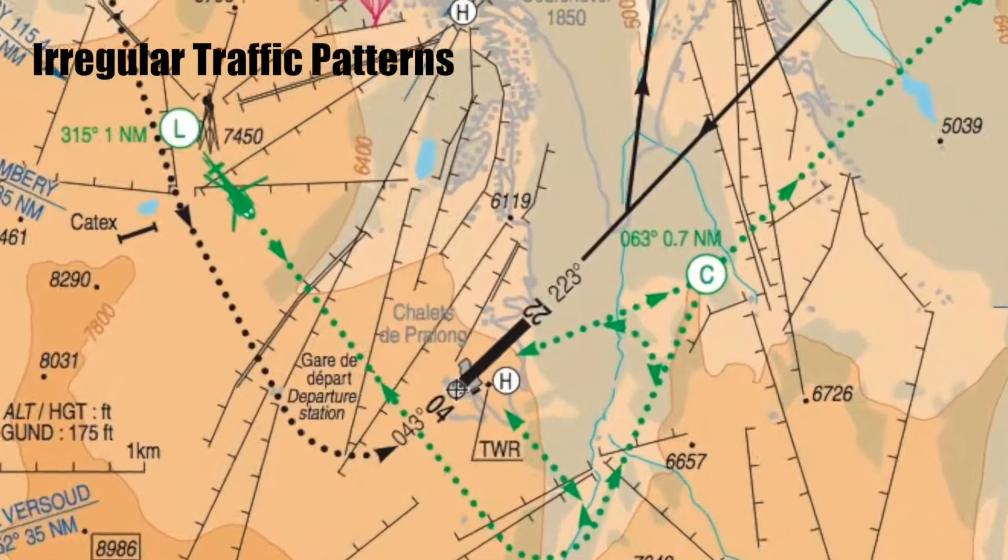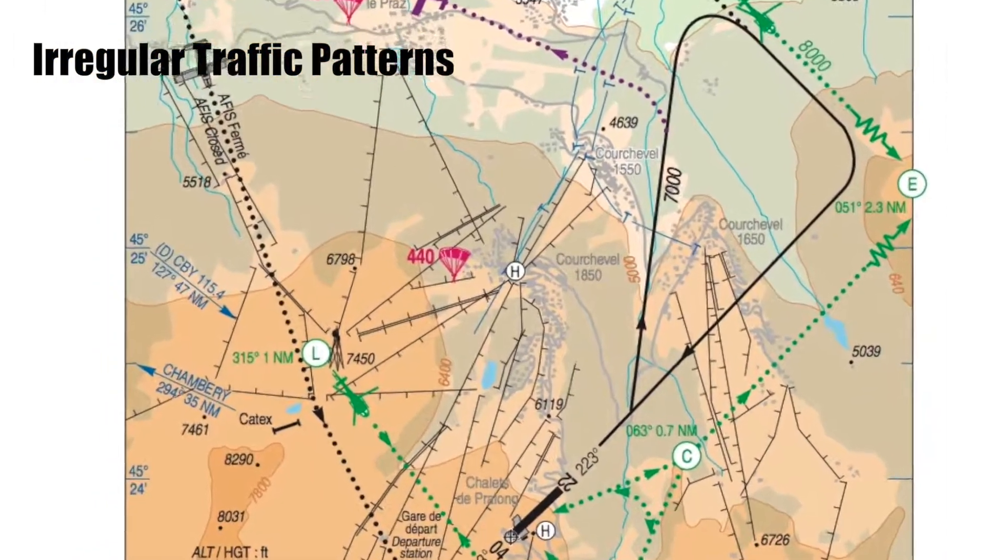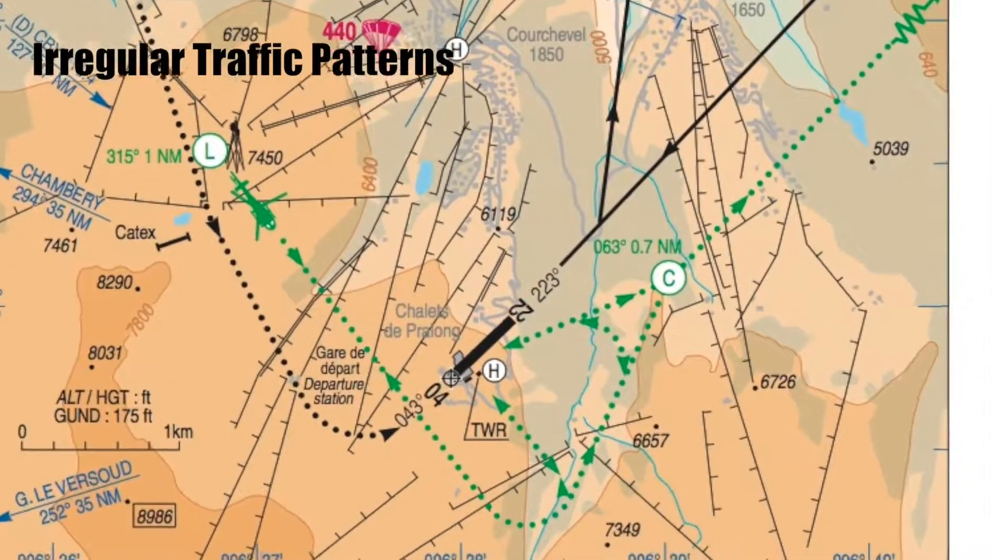In fact, you can only approach the airport from one direction. So they have a triangular sort of traffic pattern that always ends up landing and taking off from the same runway.